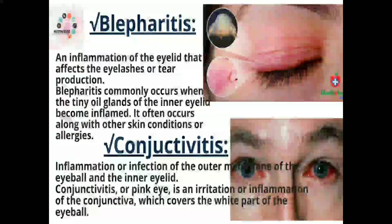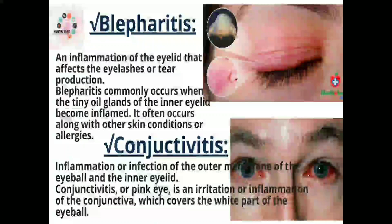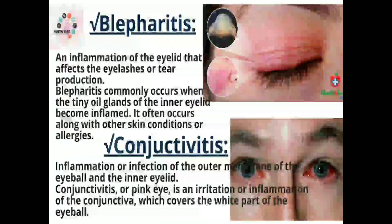Next is blepharitis — an inflammation of the eyelid that affects the eyelashes or tear production. It most commonly occurs when the tiny oil glands of the inner eyelid become inflamed. It often occurs along with other skin conditions or allergies.